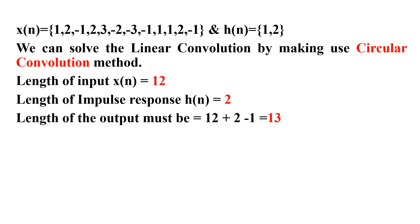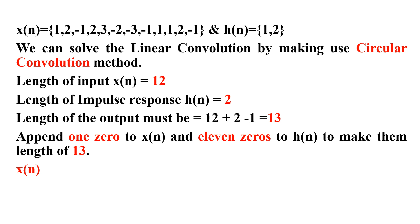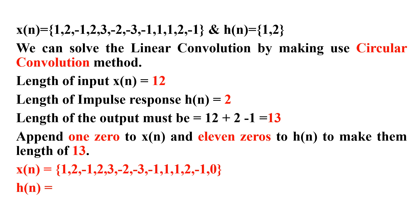Since x(n) is of length 12, I need to make it length 13 by appending 1 zero to x(n), and appending 11 zeros to h(n), so that both x(n) and h(n) are of length 13. So x(n) consists of the 12 samples with 1 zero appended, and h(n) is {1, 2} followed by 11 zeros, giving length 13.